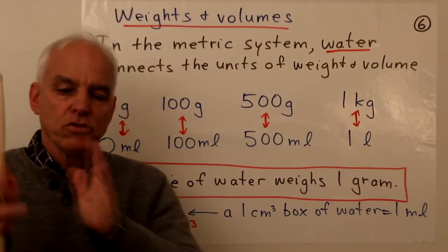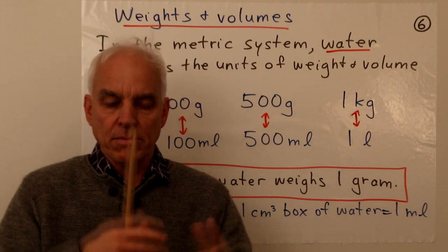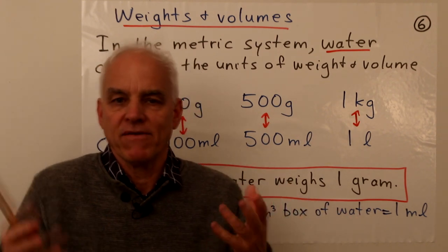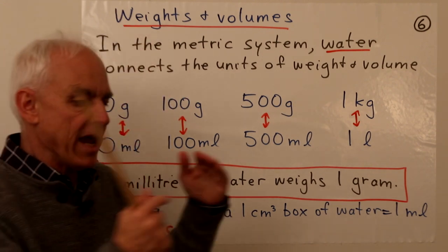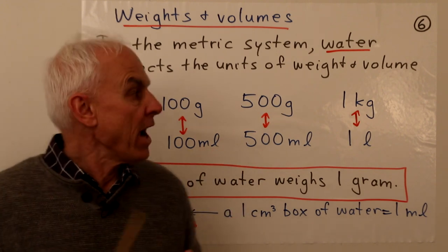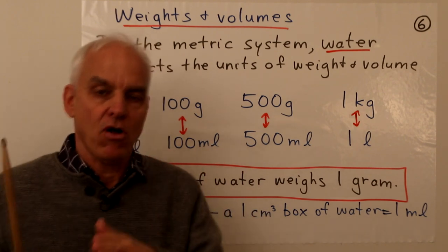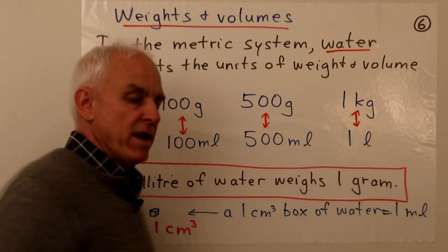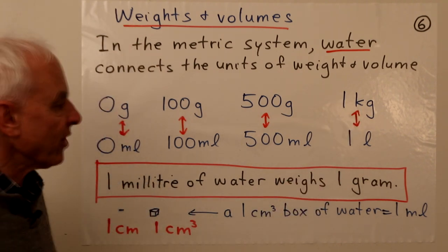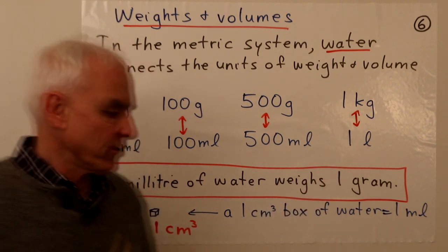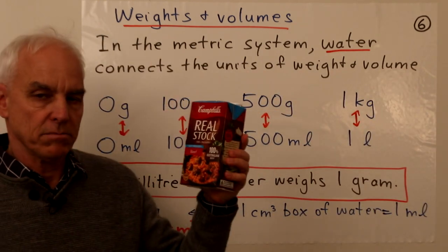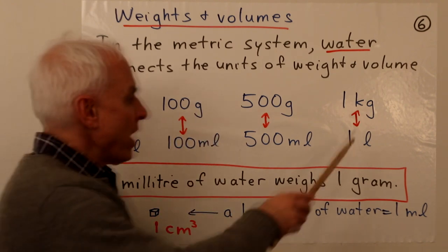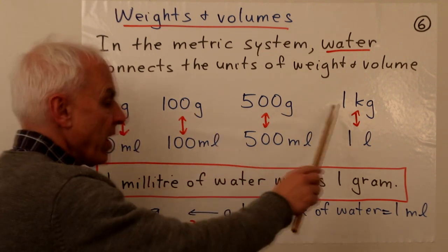These two measurement systems — weight and volume — are closely connected. In the metric system, the two scales are naturally linked by water. Water is the connection between units of weight and units of volume. The definition of one kilogram, up until relatively recently, was the weight of water contained in one liter. So if this were water instead of beef stock, this one liter of water would weigh one kilogram.